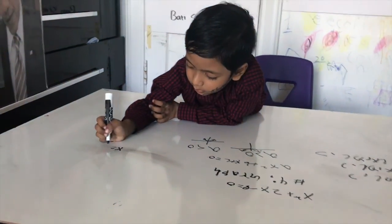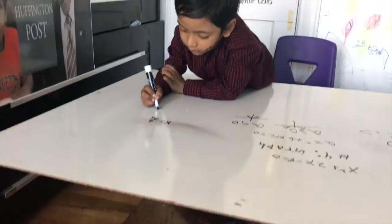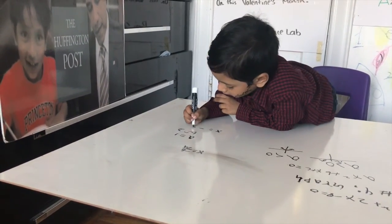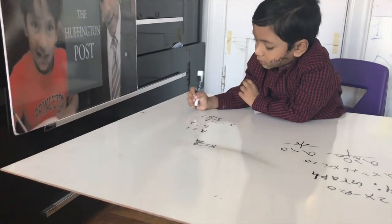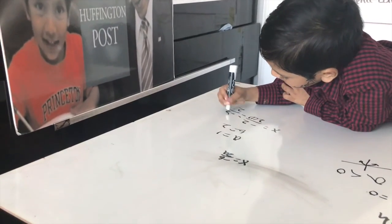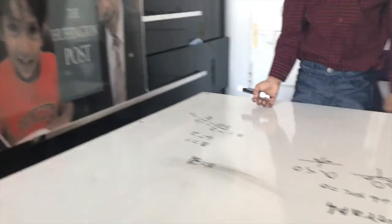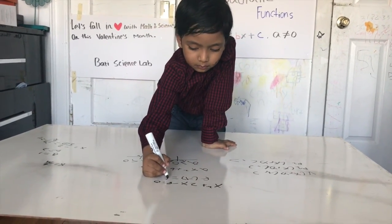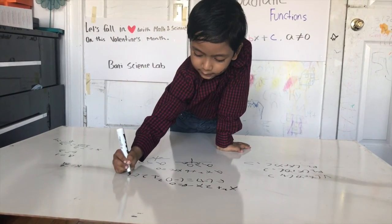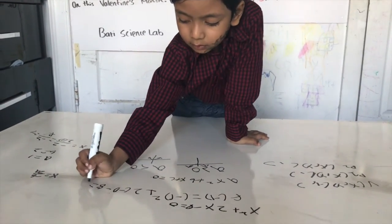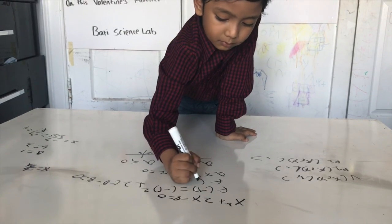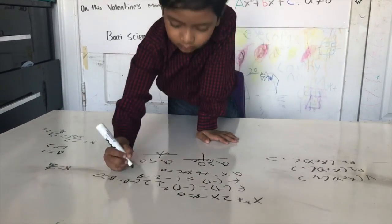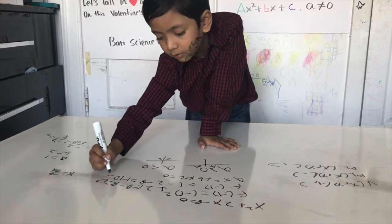We need coordinates X, Y and two points. The vertex X-coordinate is X equals negative B over 2A, which is negative 2 over 2 times 1, equal to negative 1. Then we evaluate: negative 1 squared plus 2 times negative 1 minus 8, which equals 1 minus 2 minus 8, equal to negative 9. So the vertex is at negative 1, negative 9.